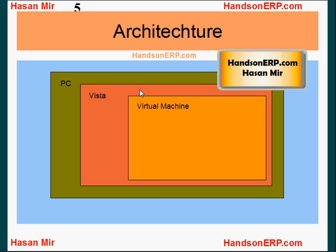On top of Vista you will have virtual machine software running. A virtual machine is software that emulates a machine — a hardware. There are a couple of vendors out there, and I'll talk in detail about which vendor I prefer and how to install a virtual machine. The reason we're installing a virtual machine is that Oracle Applications Release 12 is not compatible with Windows Vista — it's not going to run on Vista.